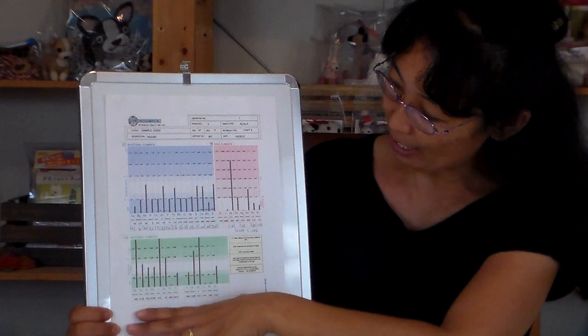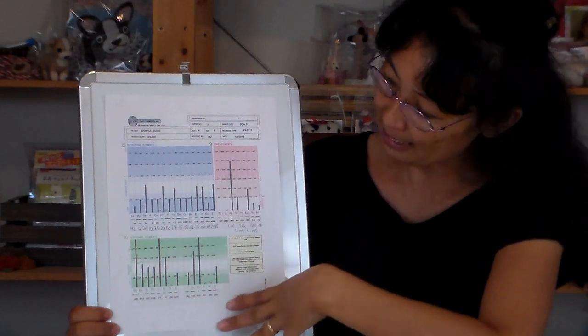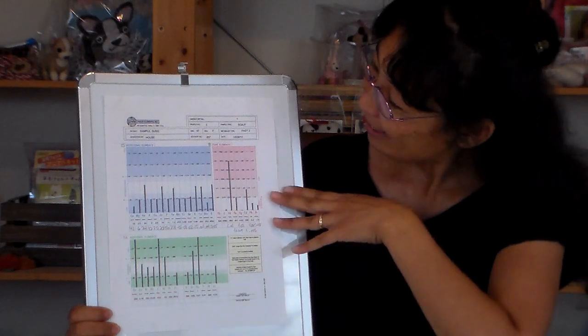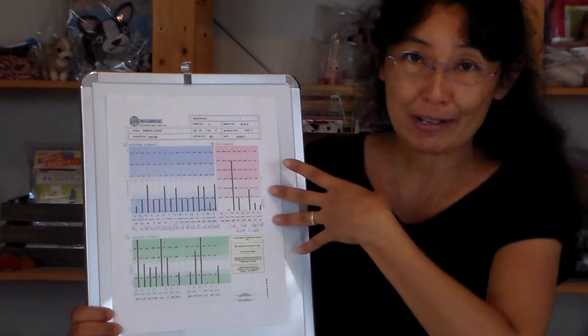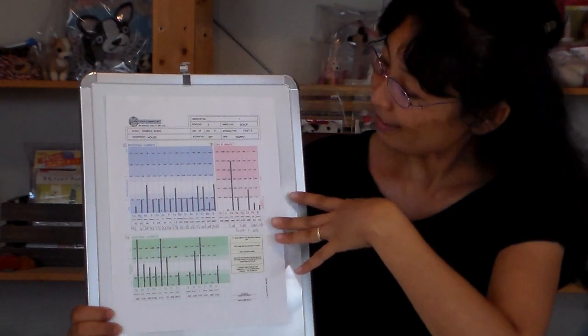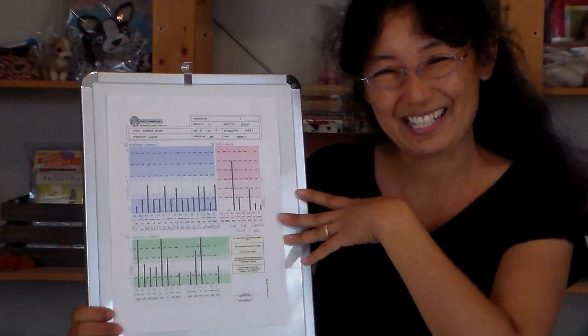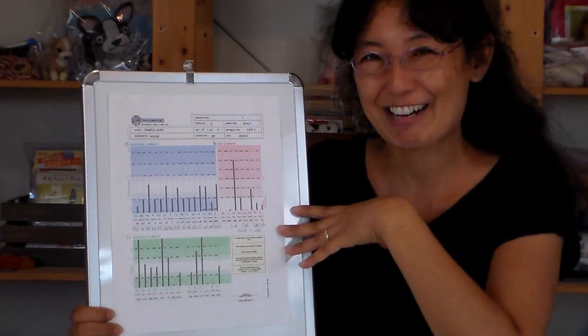And then there's 14 additional elements below. There's a little less data on these but the lab does give you a lot of great info. And then you'll see eight toxic elements, so this would be your mercury, aluminum, and toxic metals that you're eliminating in your hair right now.